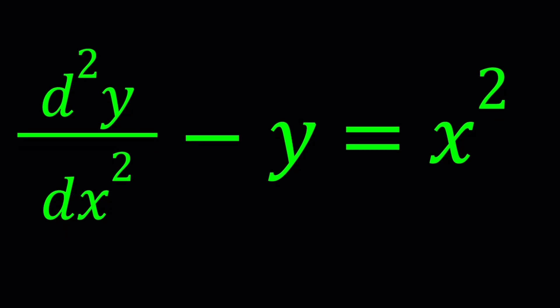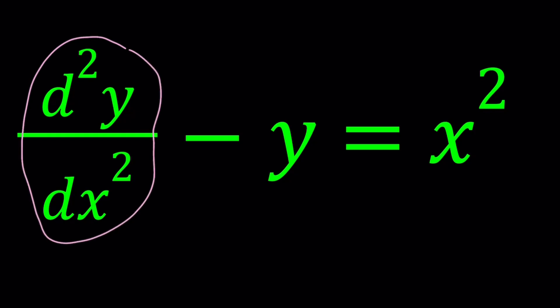So we have d squared y over dx squared minus y equals x squared. y is a function of x, and d squared y over dx squared represents the second derivative of y with respect to x, which we can also write as y double prime.